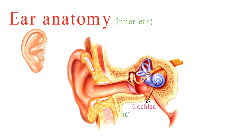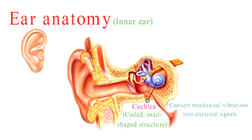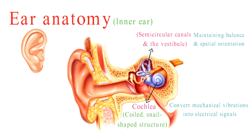The cochlea is a coiled, snail-shaped structure in the inner ear responsible for converting mechanical vibrations into electrical signals. It is filled with fluid and contains thousands of hair cells. The inner ear also includes the semicircular canals and the vestibule, which are essential for maintaining balance and spatial orientation — they detect changes in head position and movement. The electrical signals generated in the cochlea are transmitted to the brain via the auditory nerve, also known as the cochlear nerve.